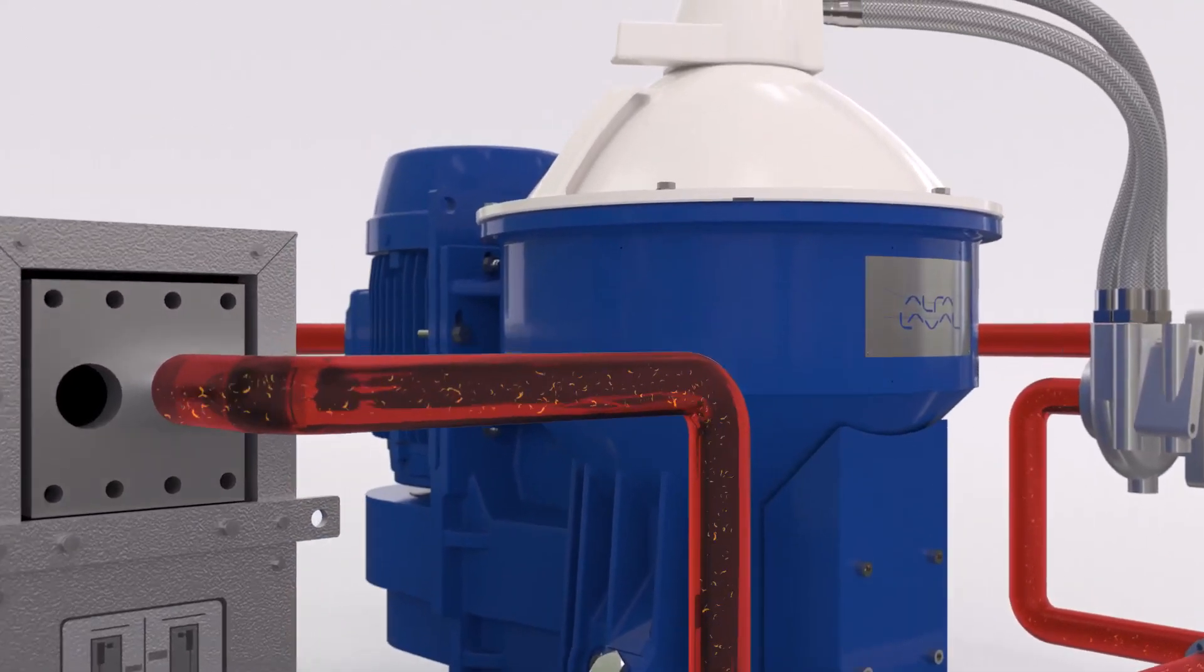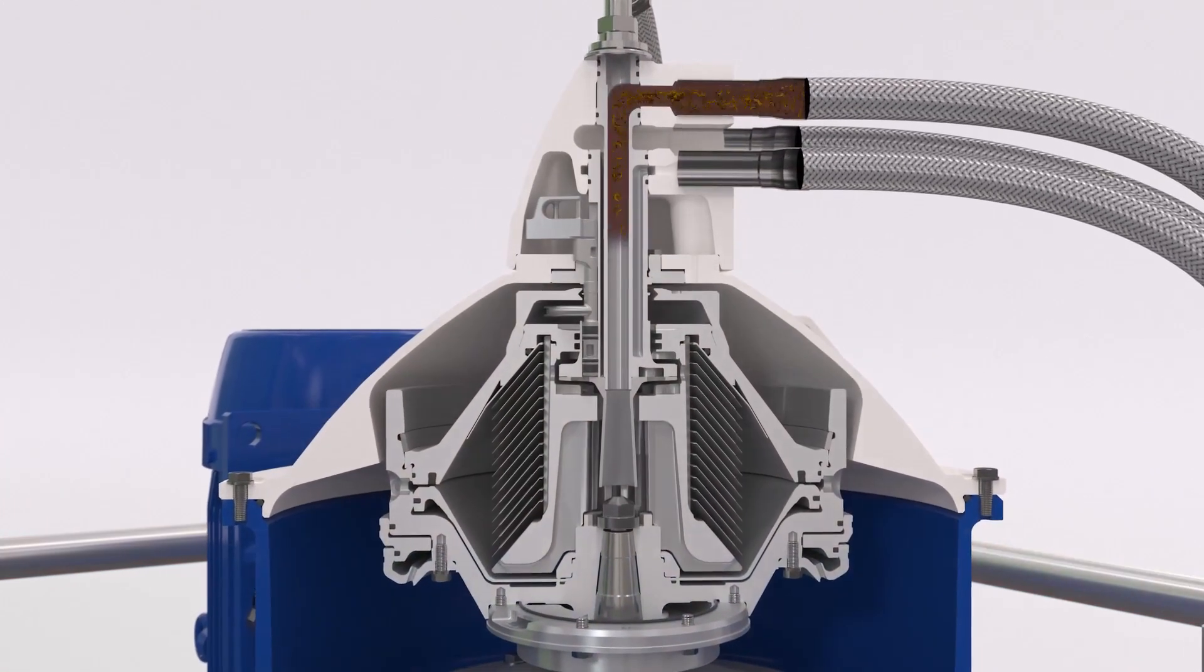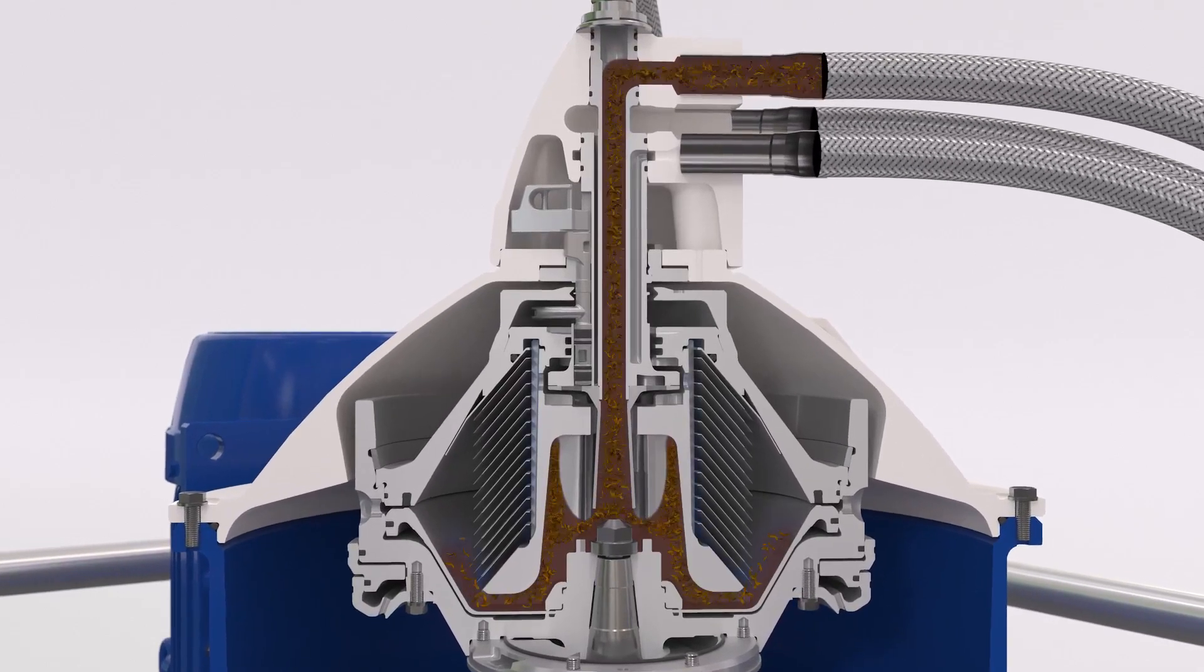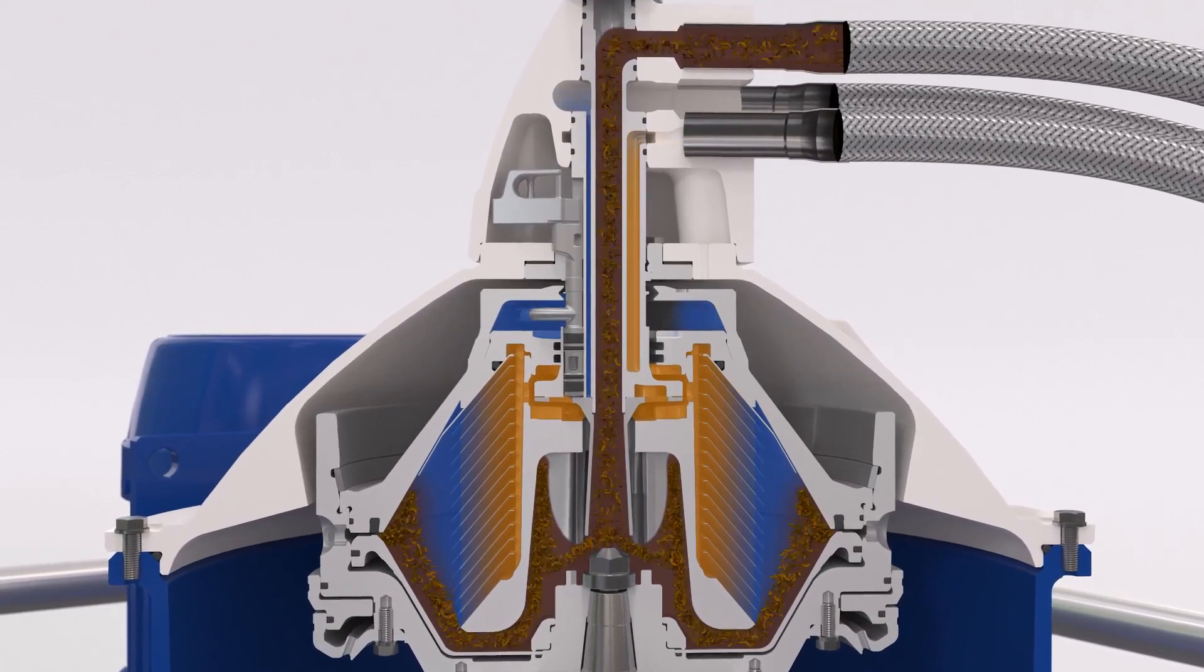The lubrication oil is then pumped into the Alpha Laval high speed separator, where the centrifugal force removes potentially harmful particles and contaminants, leaving a lubrication oil that's ready to be reused in the engine.